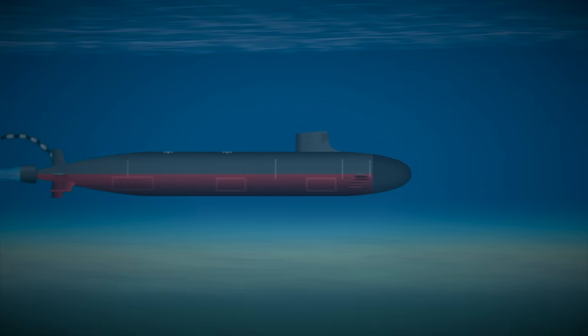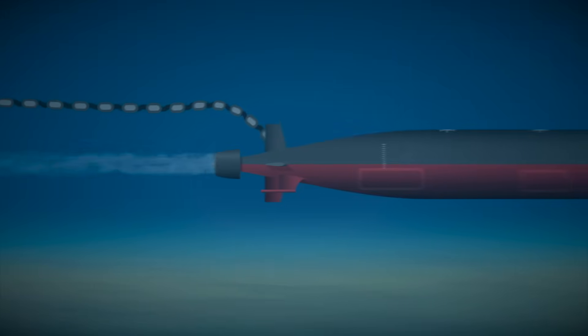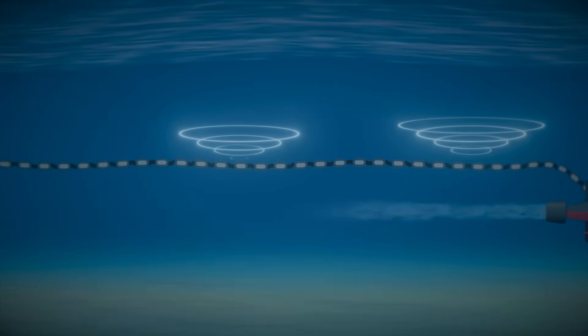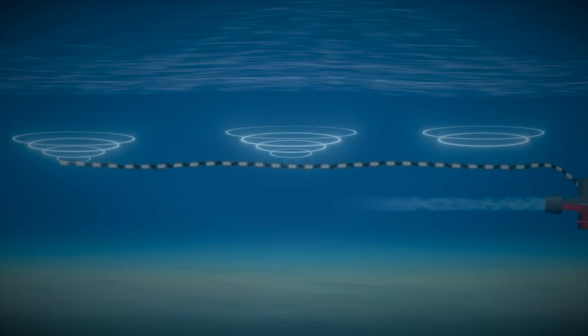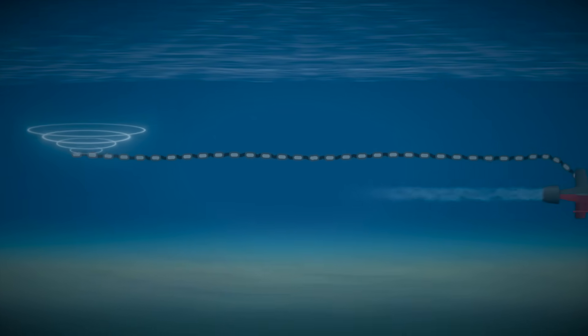Submarines don't just use onboard hydrophones to listen. They often drag a long cable behind them, called a towed-array sonar. These sensors stretch out for hundreds of meters and help submarines hear better over long distances, especially at low frequencies. And because the array is far away from the noisy machinery inside the sub, the signal is much clearer.